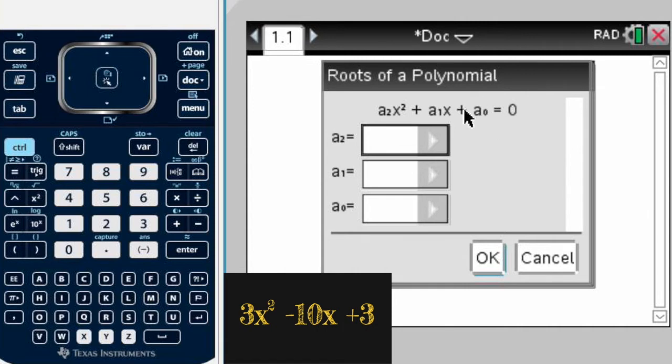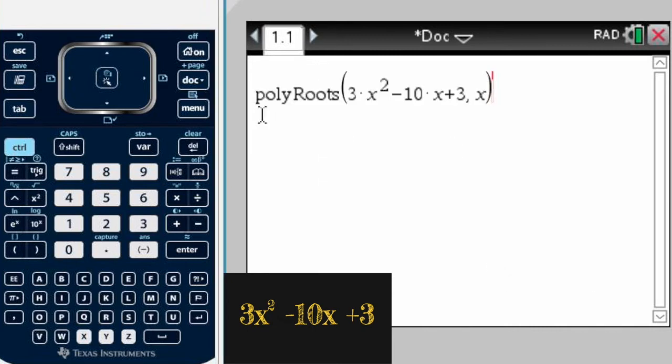So in our case, our coefficient for x to the second power is a 3, so right here we put a 3. Our coefficient for x is negative 10, notice how this is a plus so you have to put the negative. Now that's our constant, it is plus 3. You press OK and this is what is going to appear. You don't have to worry about that, that is only the command for the calculator to work. After that we're just going to press enter.